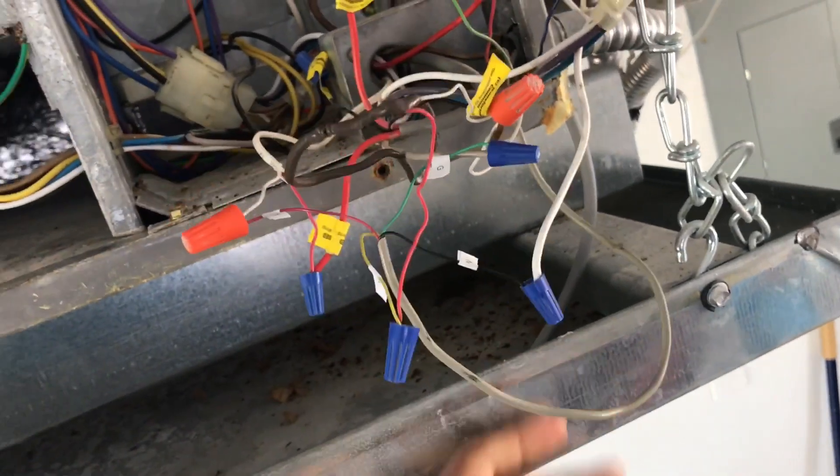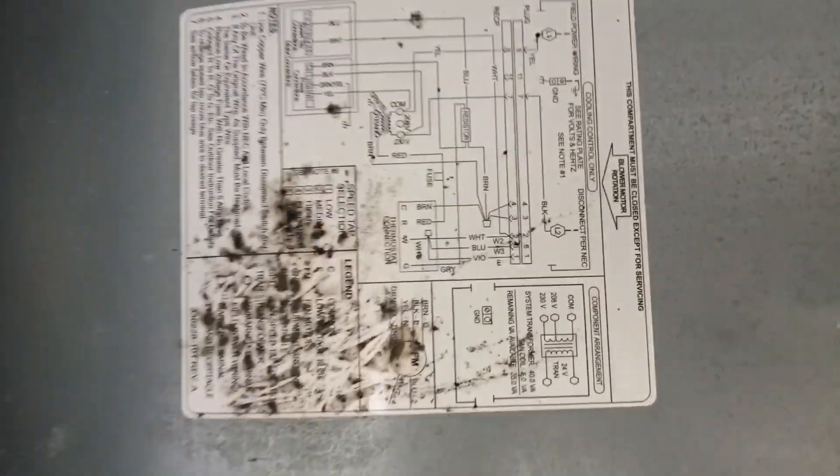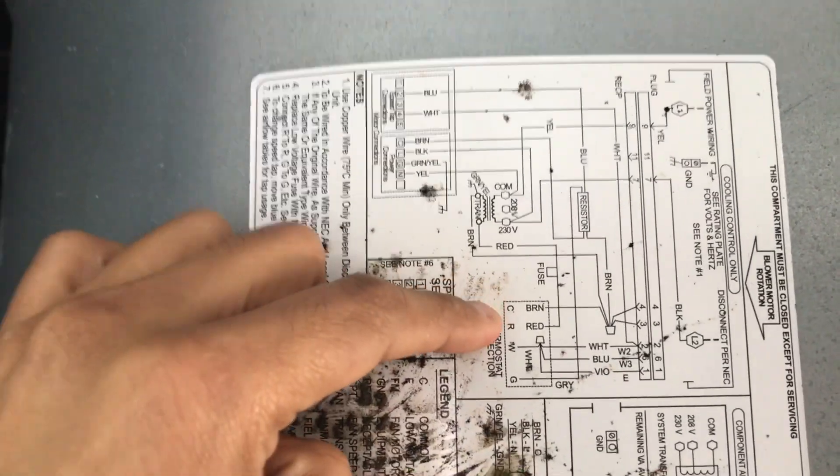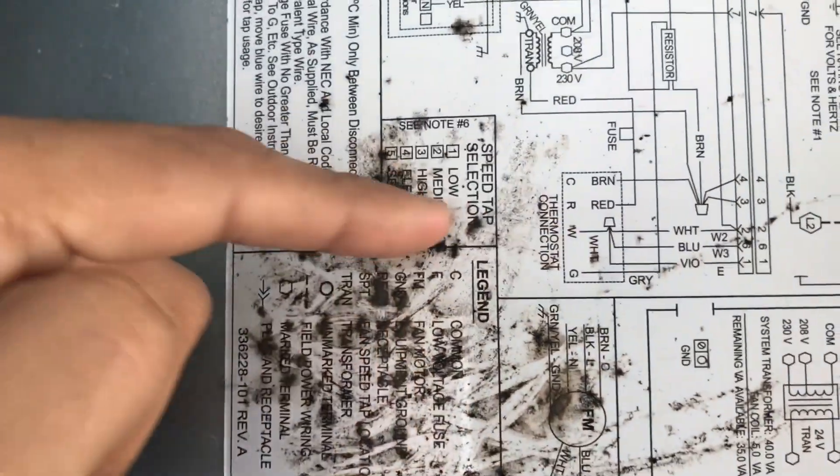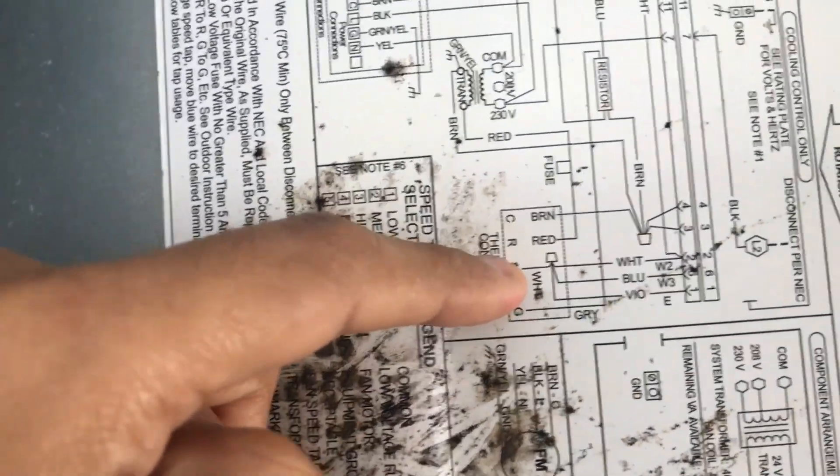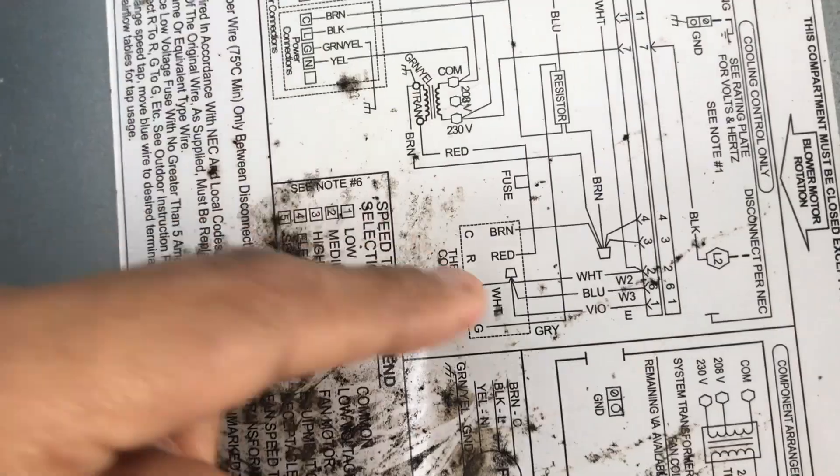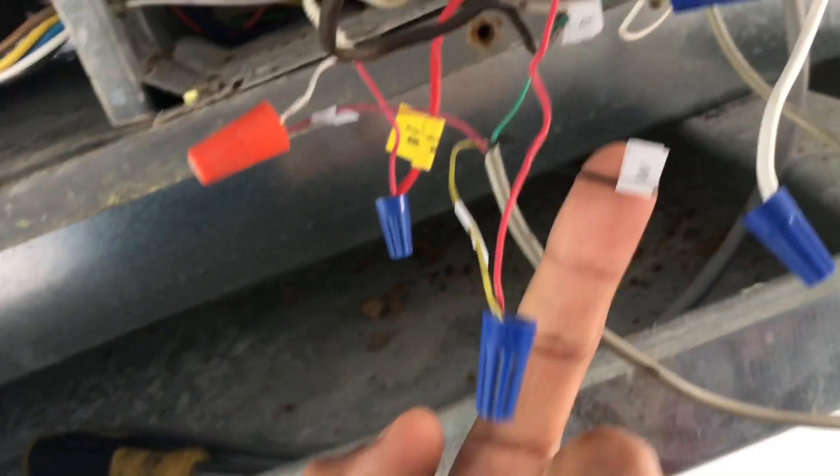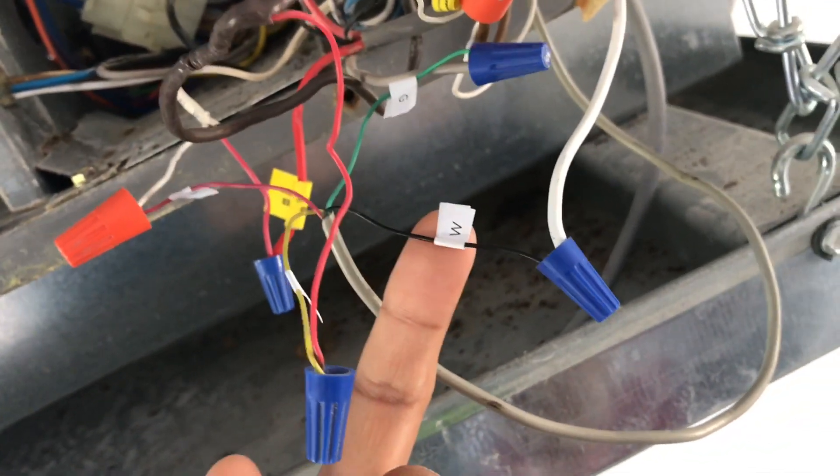Locate the schematic. In this case we have the C wire which is brown, which is right here. Then we have the red, which is red. White goes to a bundle of wires: white, blue, and violet, which is this bundle right here. It's connected to the white cable that's coming from the thermostat.